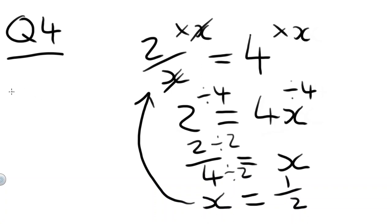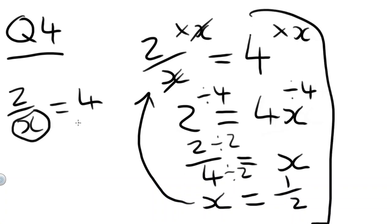A shortcut to doing this, so if we have any number, so 2 over X equals something, a shortcut to changing, instead of doing all of that, we can just switch the bottom number on the left-hand side with that number. We can just switch those numbers. So 2 over 4 equals X.